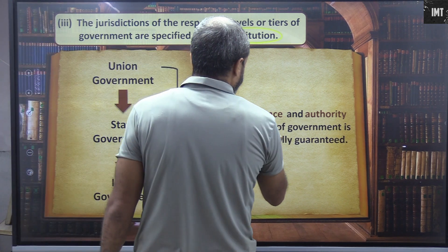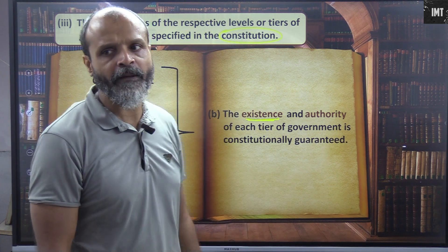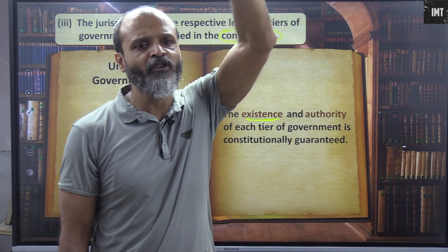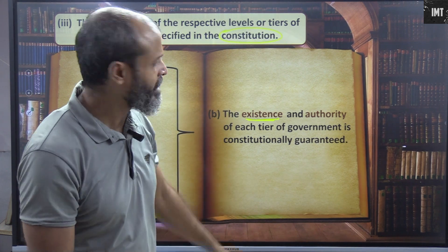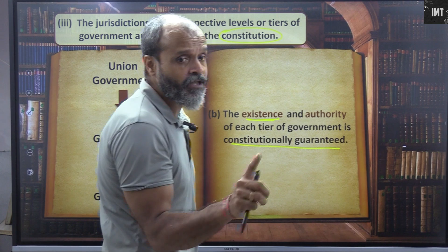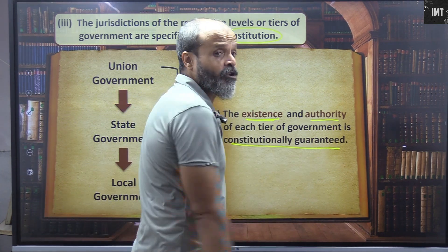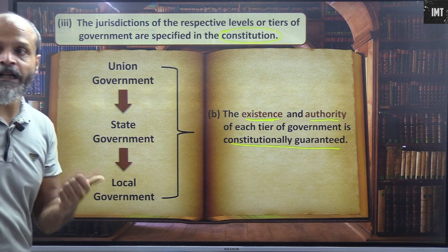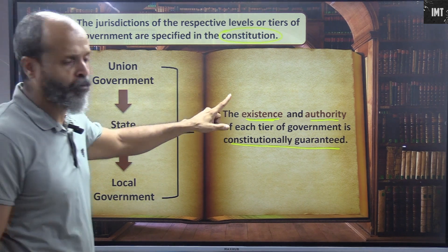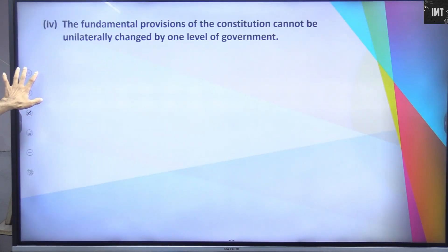The existence of all these tiers cannot be dissolved. If the central government says the state government is not allowed, that is not permitted. Both existence and authority are constitutionally guaranteed — both are constitutionally guaranteed.